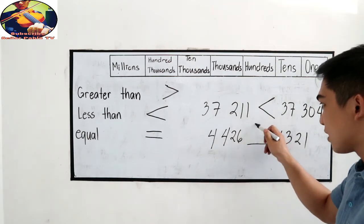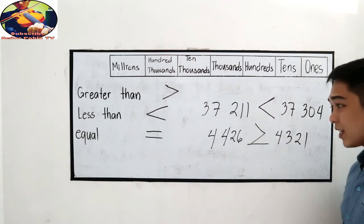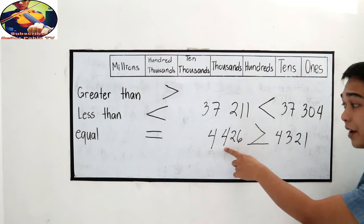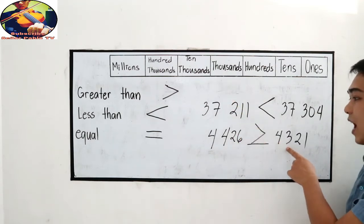So we will use the greater than symbol. Let us read: 4,426 is greater than 4,321.